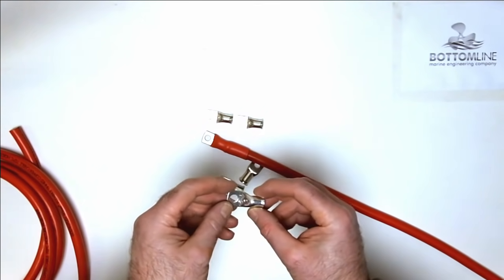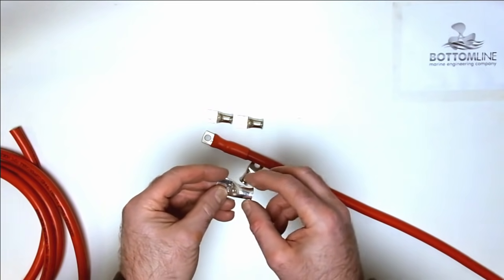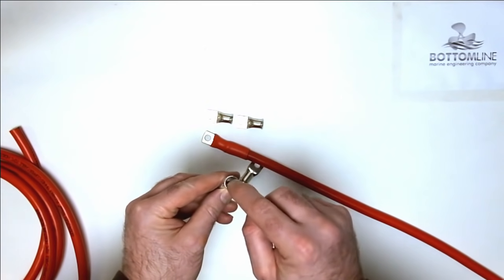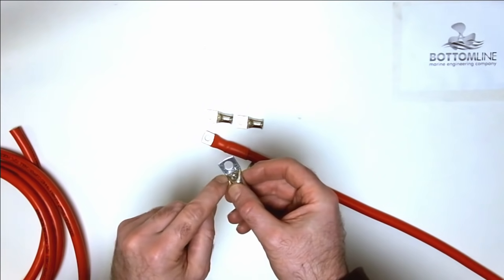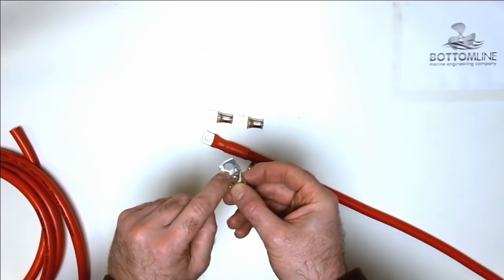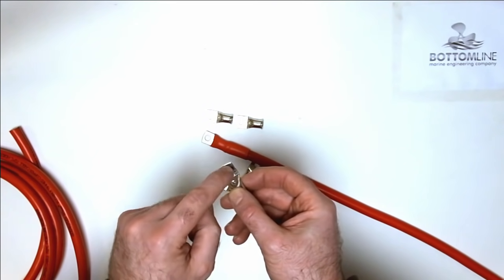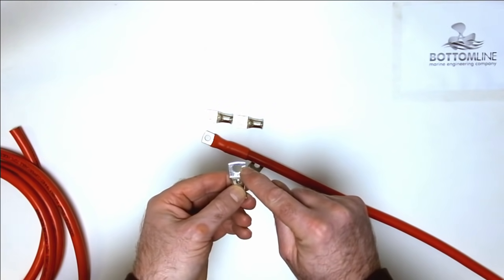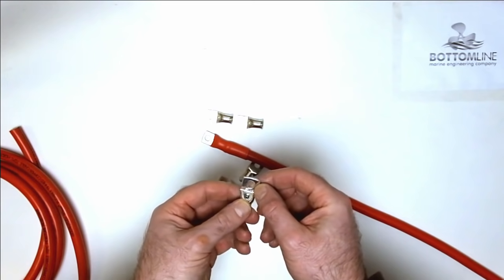The lug terminals, they're again tin plated, good quality. You've got to make sure that you get the right size hole. Make sure that it's matched to the cable. So that's what the 50 is there. That's your 50 millimeter square. The 8 is the hole there. And again, make sure that you select the right size hole for going over the stud that you intend to use it for.